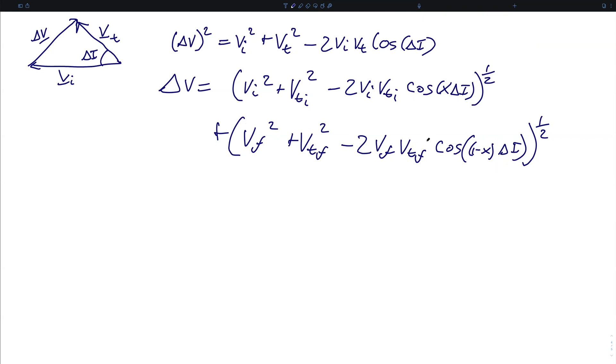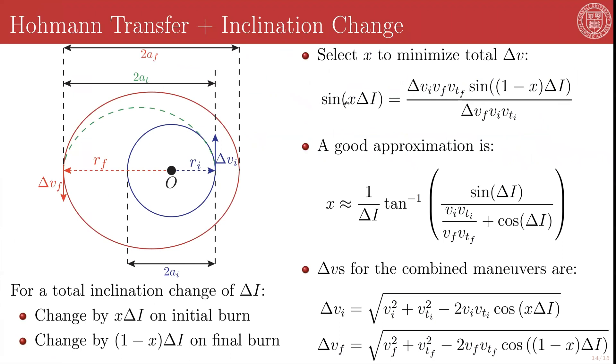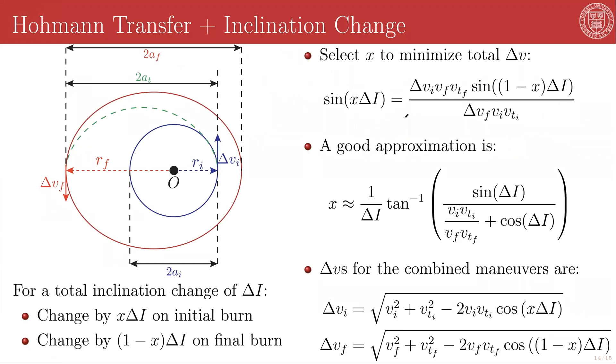We differentiate this expression with respect to X in order to find the extremum of the delta V, because we're looking for the minimum delta V. And when we do that, we get this expression. Sine of X delta I is equal to delta VI VF VTF, sine of the quantity 1 minus X delta I over delta VF VI VTI.